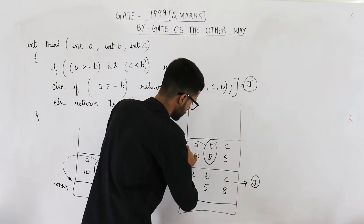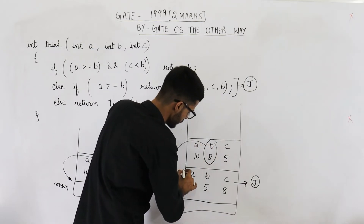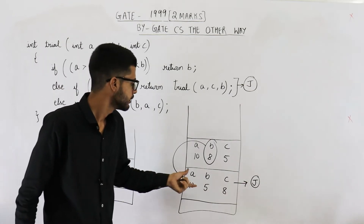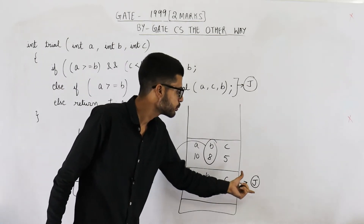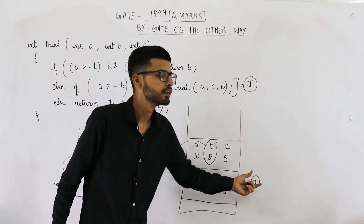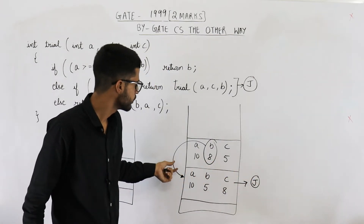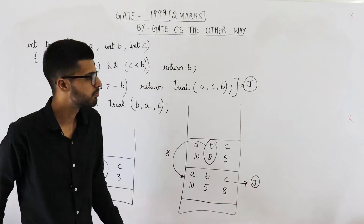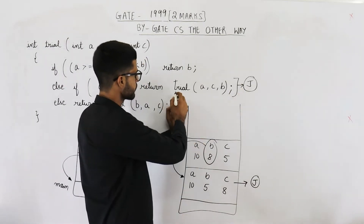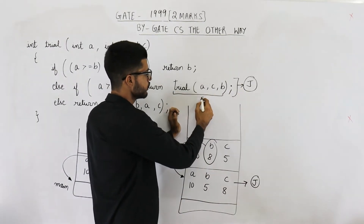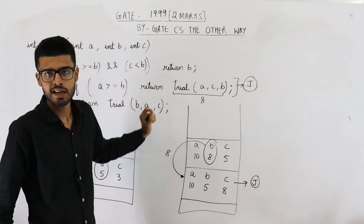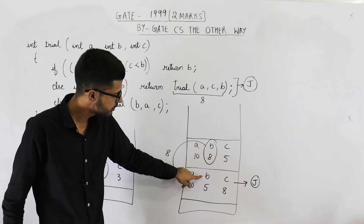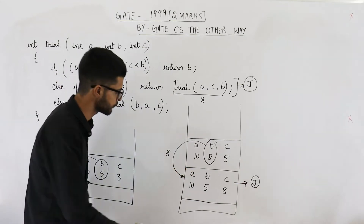B (which is 8) is returned to its calling function. That calling function has to be resumed from line number J. So just write this value: 8 is returned. Write this value in line number J — that means line J evaluated to 8. Line number J says return 8, so this function is also going to return 8 to the main function.